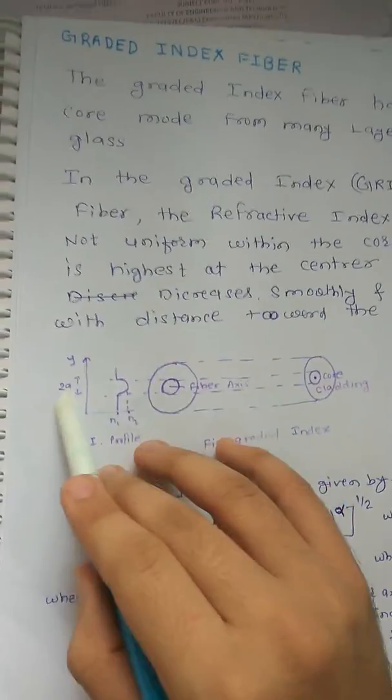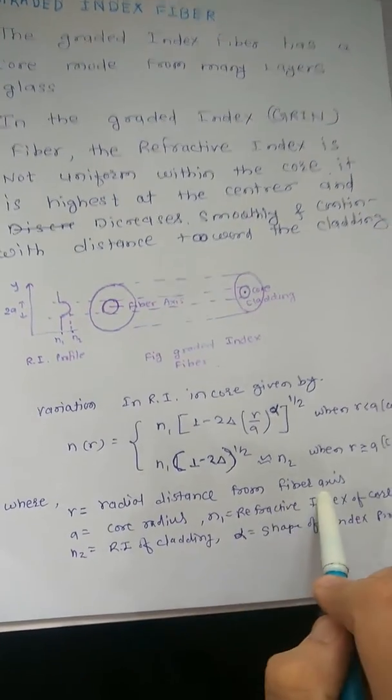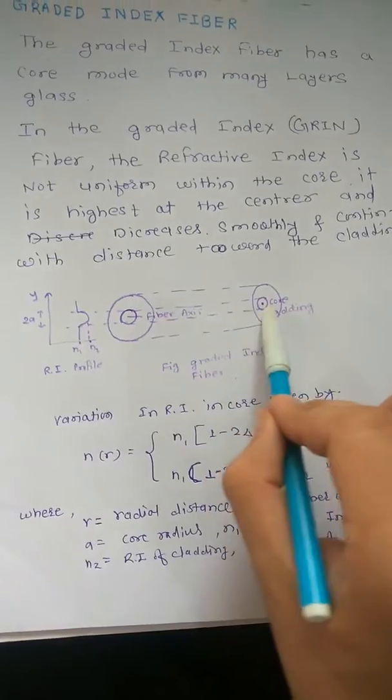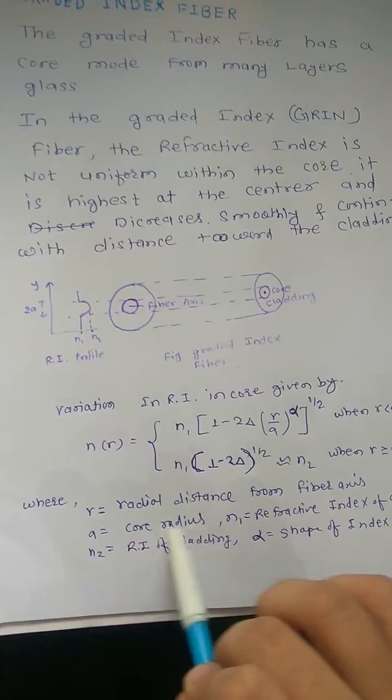What is a and what is r? r is the radial distance from the fiber axis. The fiber axis is this, and radial distance from fiber axis is r. And a is the core radius. This core radius is a.